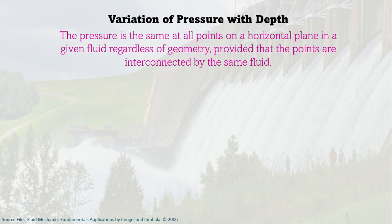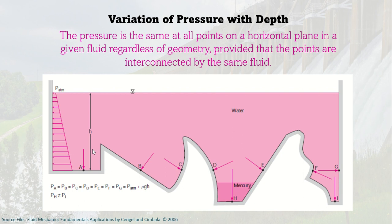For the variation of pressure with depth, the pressure is the same at all points on a horizontal plane in a given fluid, regardless of geometry, provided that the points are interconnected by the same fluid. For example, in a container like an ocean with different bottom profiles, the pressure at points A, B, C, D, E, F, and G is the same because they are located at the same depth, assuming the same fluid exists at all these points.